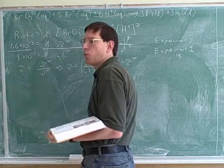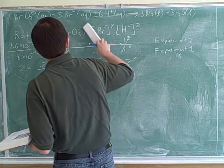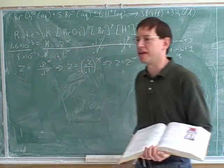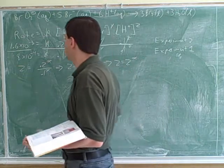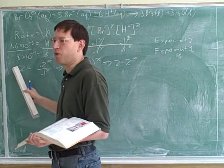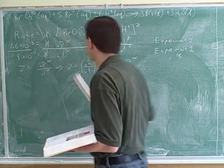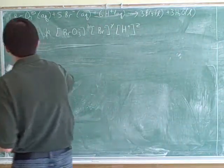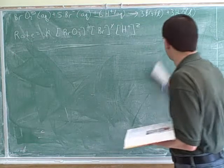So you figured out that x was one. We want to make sure we go back and put that in our overall rate expression. It's good that you're putting the bigger rate over the smaller rate — that way we don't end up with a one-half over here when we do the division.